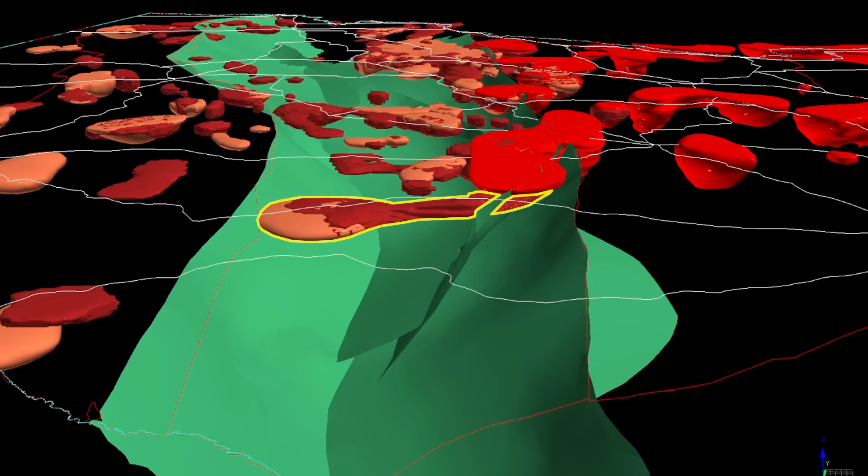So this ancient magma chamber doesn't outcrop at all in far western Victoria around the Ararat region. It's still buried beneath the earth. It only outcrops west of Ballarat.